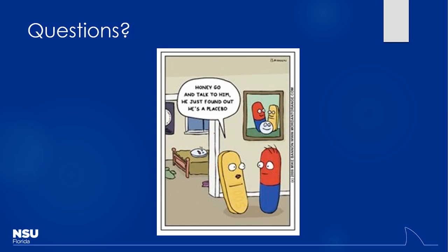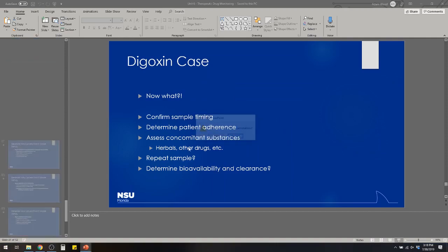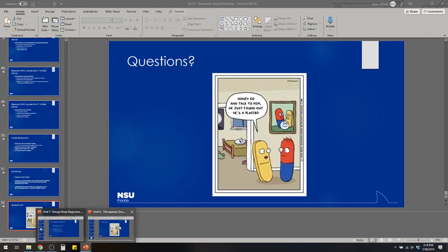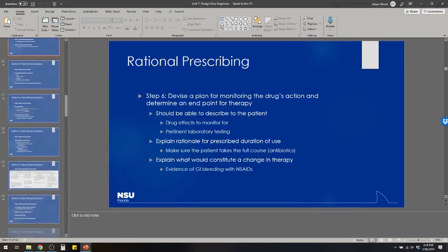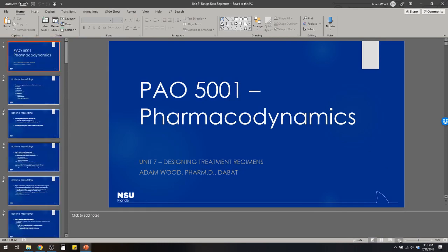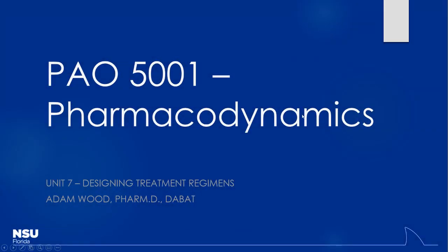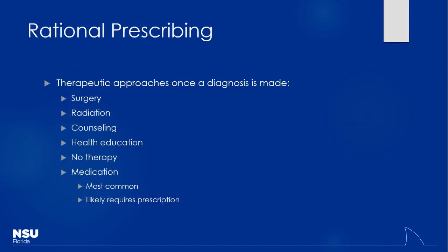Ideally we'd use drugs that never need TDM — wide therapeutic index drugs. However, some drugs require it: warfarin, digoxin, aminoglycosides, vancomycin — these are drugs used day in and day out that just may be the best drug for that patient. We'll now move on to the last section for test material: designing dosage regimens and rational prescribing — a more practical application of what we've learned.